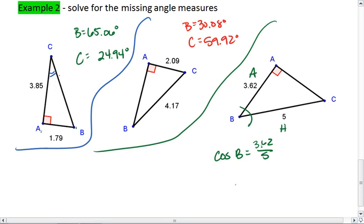Because I'm solving for an angle, I'm going to use cosine inverse. That means B equals cosine inverse of 3.62 divided by 5, which gives me 43.61 degrees.